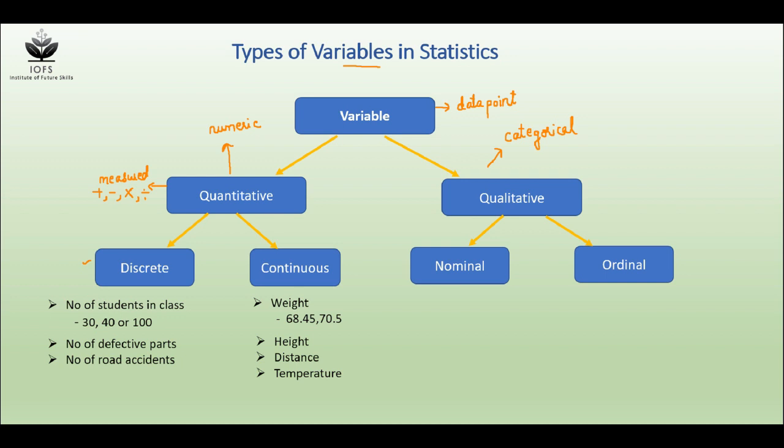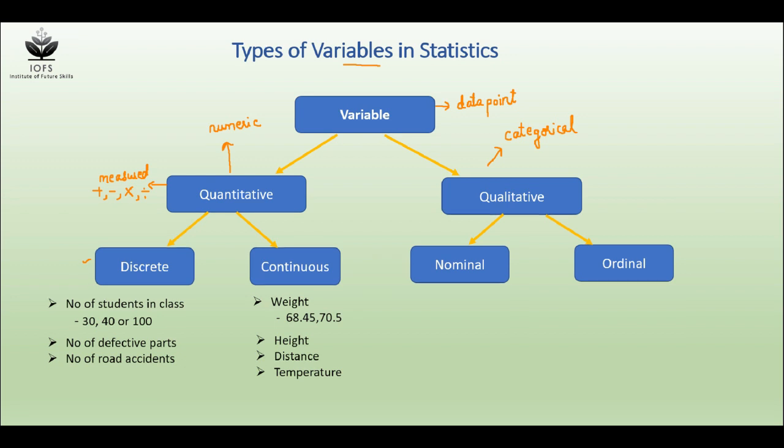So I think you're clear with quantitative data. Let's check what qualitative data means. Qualitative data are descriptors or characteristics that cannot be easily measured but can be observed, like taste, smell, etc.